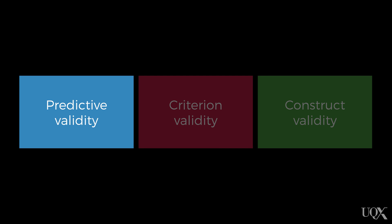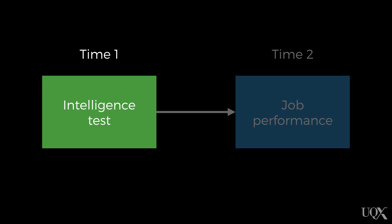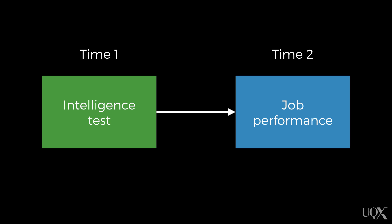Predictive validity refers to whether or not the scores on the test match with later outcomes. For example, when using an intelligence test to predict job performance, what we'd want to do is measure a person's intelligence at one point, and then some time later, compare their performance in the job to their scores on the intelligence test. If their intelligence test scores predict their job performance, then we would say that it has predictive validity for that purpose. We could then use the intelligence test when hiring new people for the job to give us some idea about who might be the best candidate to hire.